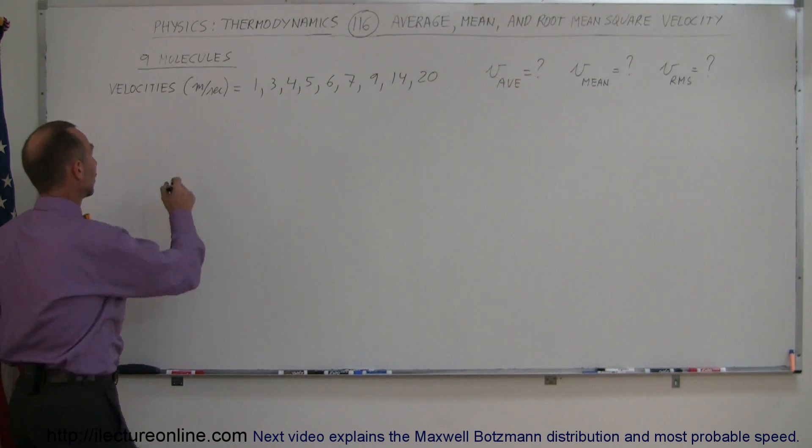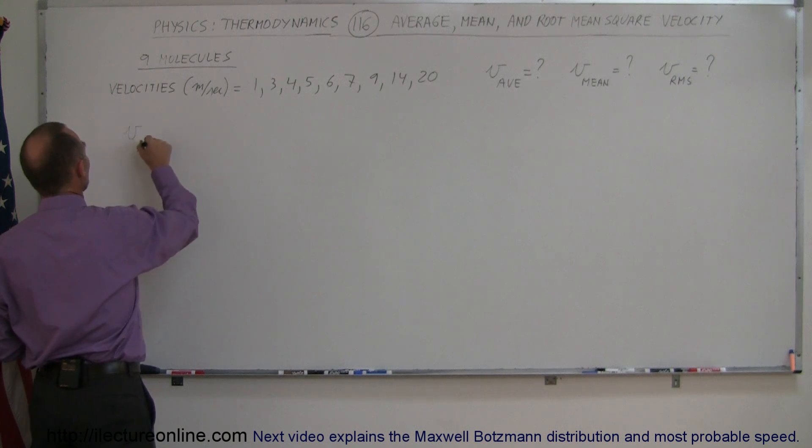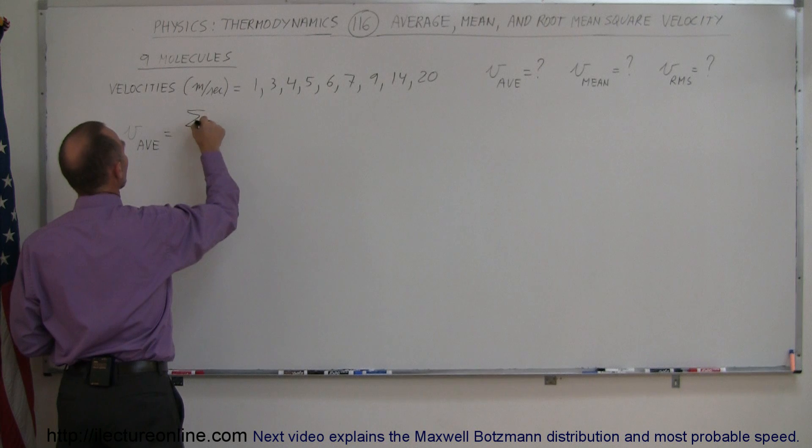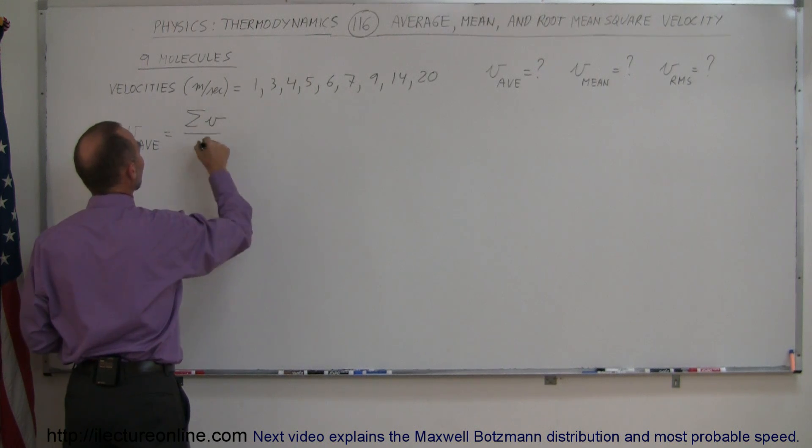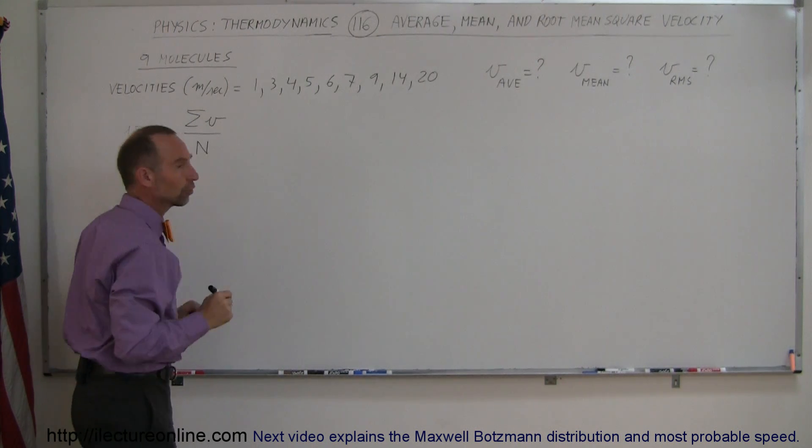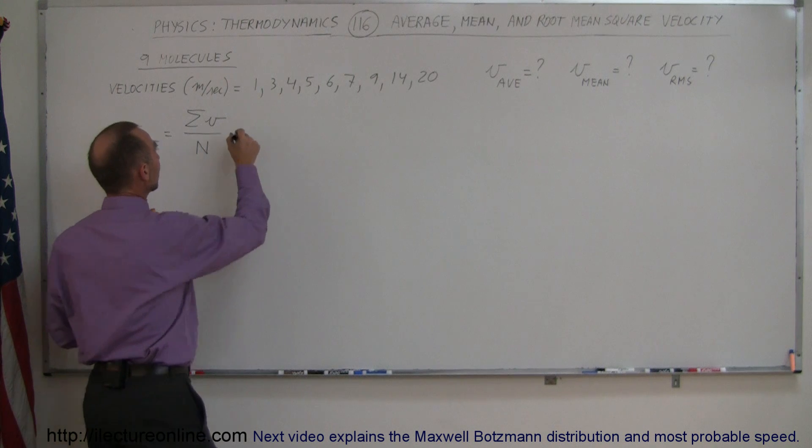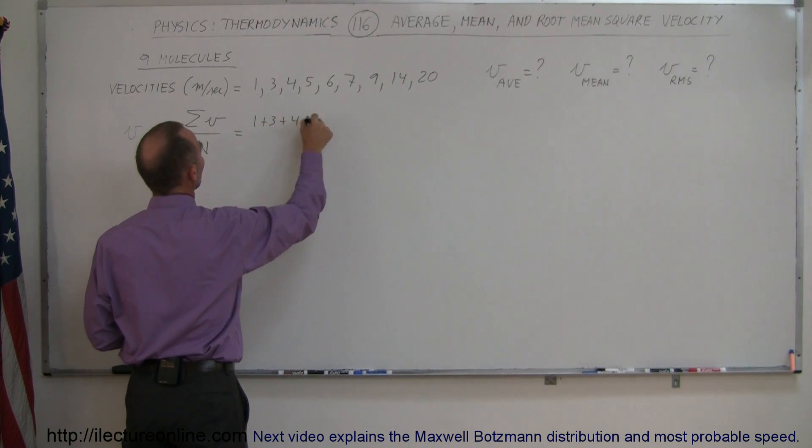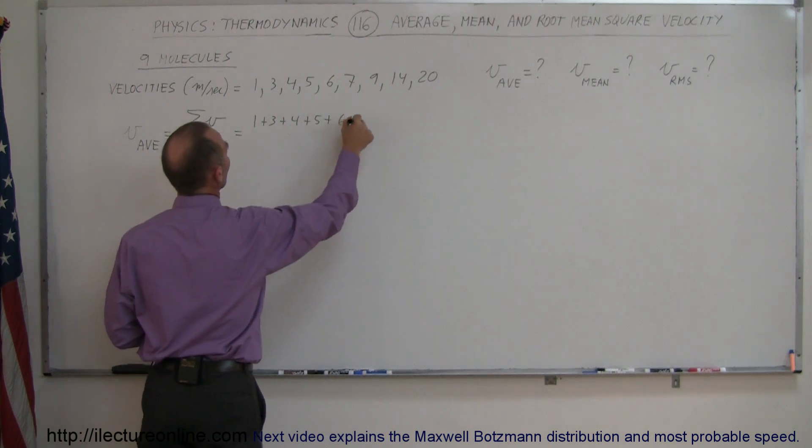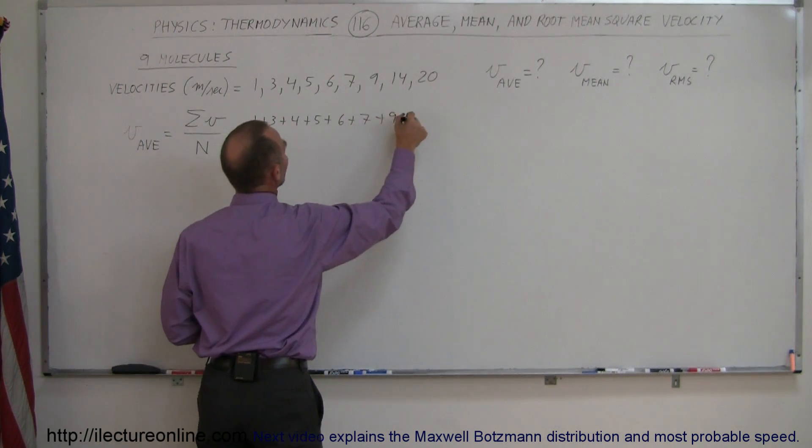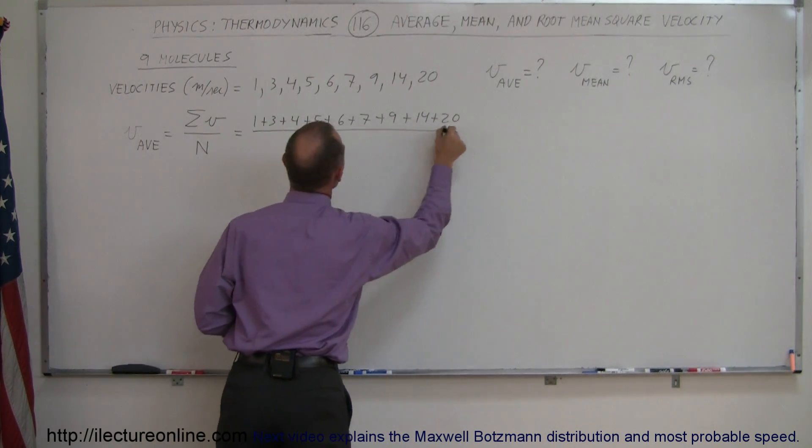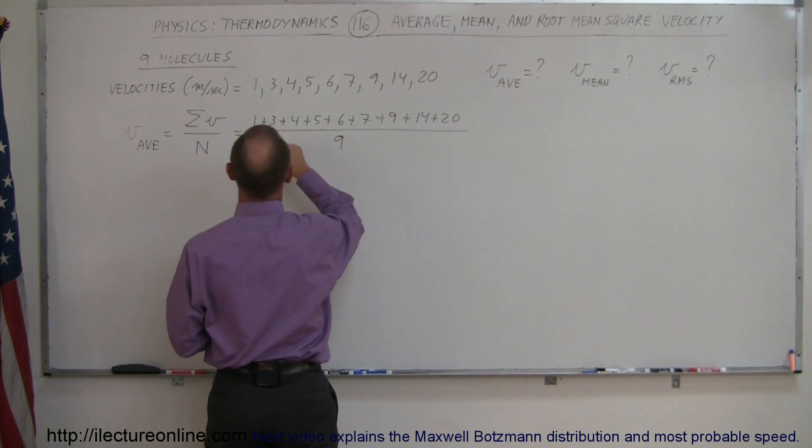So, starting out with the average, the average is equal to the sum of all the velocities divided by the number of molecules that I have. So, in this case, this would be equal to 1 + 3 + 4 + 5 + 6 + 7 + 9 + 14 + 20, all divided by the number that I have, and there's nine molecules.